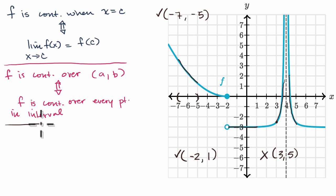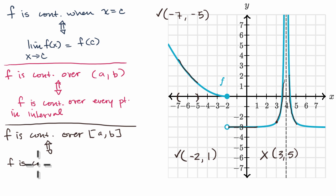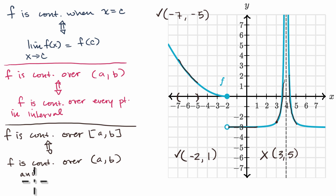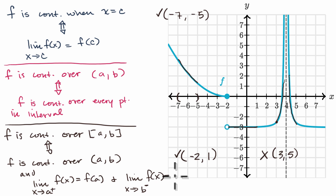Now let's think about the slightly more involved case, which is when you have a closed interval. F is continuous over the closed interval from a to b — which includes not just the points between a and b but the endpoints as well — if and only if f is continuous over the open interval, and the limit as x approaches a from the right of f of x is equal to f of a, and the limit as x approaches b from the left of f of x is equal to f of b.